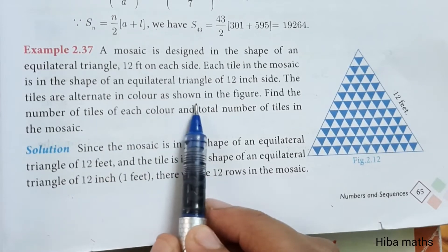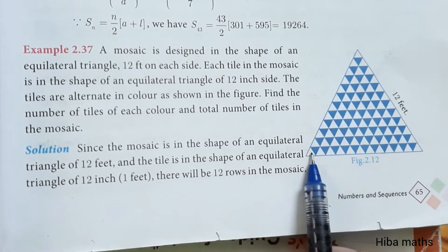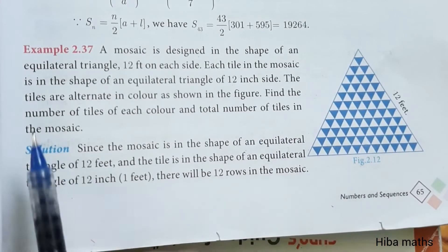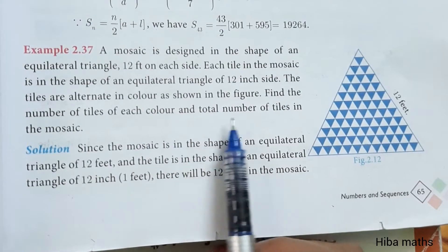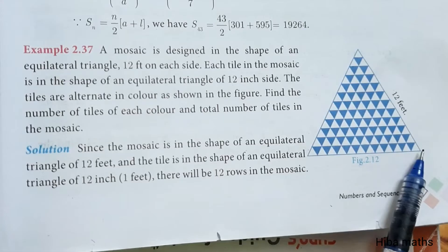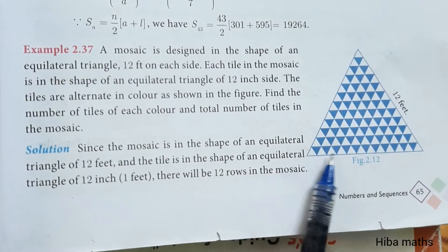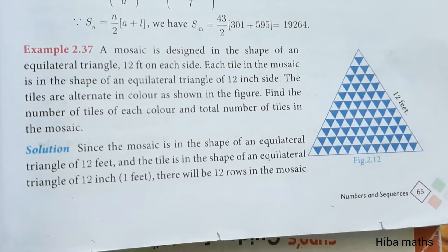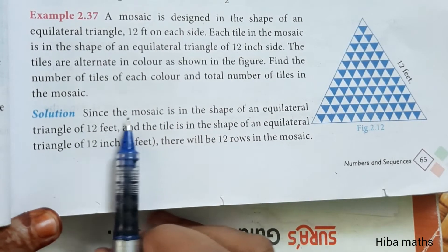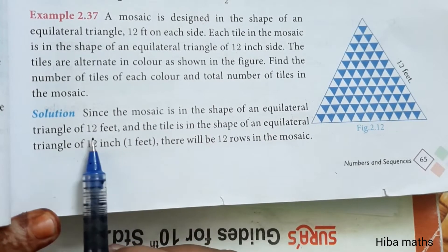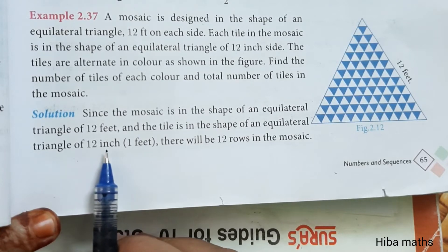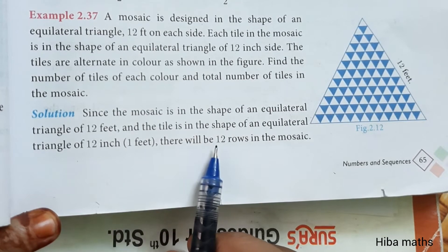The tiles are alternated in colors as shown in the figure — one white and blue. Find the number of tiles of each color and the total number of tiles in the mosaic. So, there are blue tiles and white tiles. If you have an equilateral triangle of 12 feet with tiles of one inch side, how many rows are there?